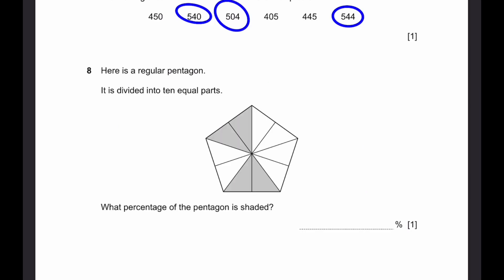Question 8. Here's a regular pentagon. It's divided into 10 equal parts. What percentage of the pentagon is shaded? Well, we know that all 10 of these parts are equal, and we have 1, 2, 3, 4 parts which are shaded. So the percentage shaded is going to be 4/10 multiplied by 100 to make it a percentage.